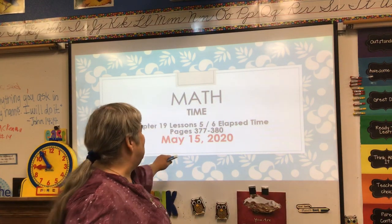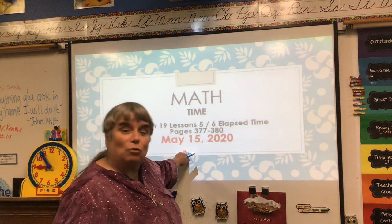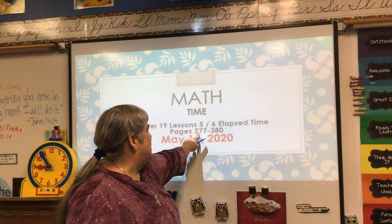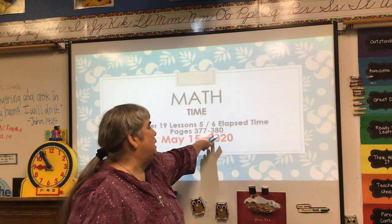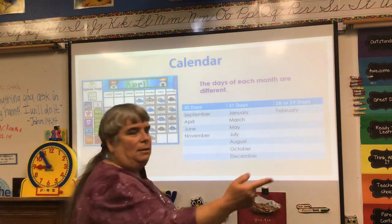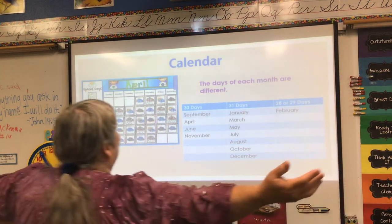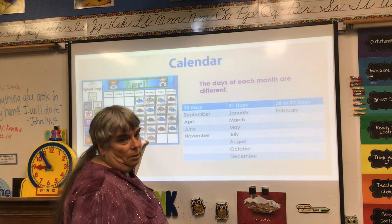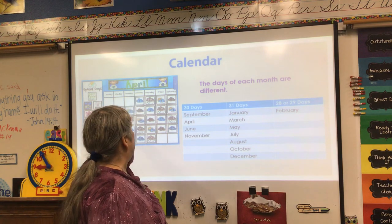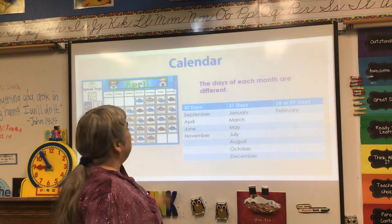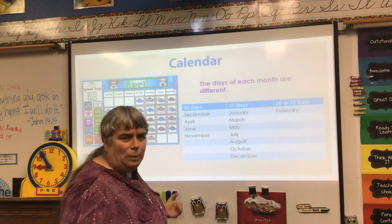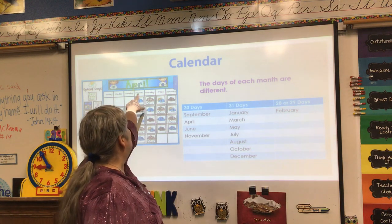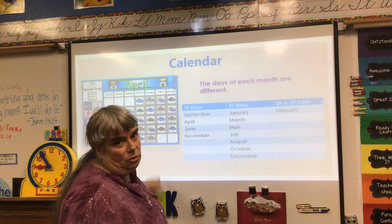Let me just let you know, since we need to know what day it is: today is Friday, May 15, 2020, and the pages we're doing today are page 377 through page 380. The calendar in your textbook is April. April 2020 starts on a Wednesday, and the last day of the month is Thursday.